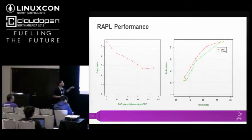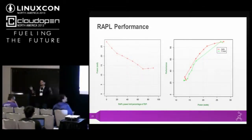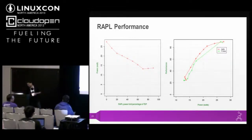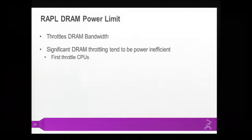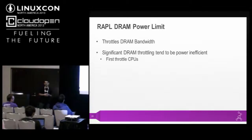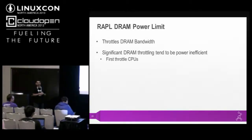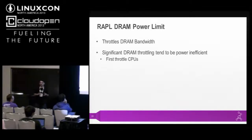RAPL has finer granularity than P states. Although you can specify 0 to 100 percent for P states, there are not 100 distinct performance points in the processor, but RAPL has a much wider range. Another good feature of RAPL is it can also power-limit DRAM, which can consume almost 20 to 25 percent of system power — it throttles DRAM bandwidth. However, based on experiments, throttling DRAM may be power-inefficient because the CPU may run at extra voltage. It is effective, but you should exhaust other methods first before throttling DRAM.